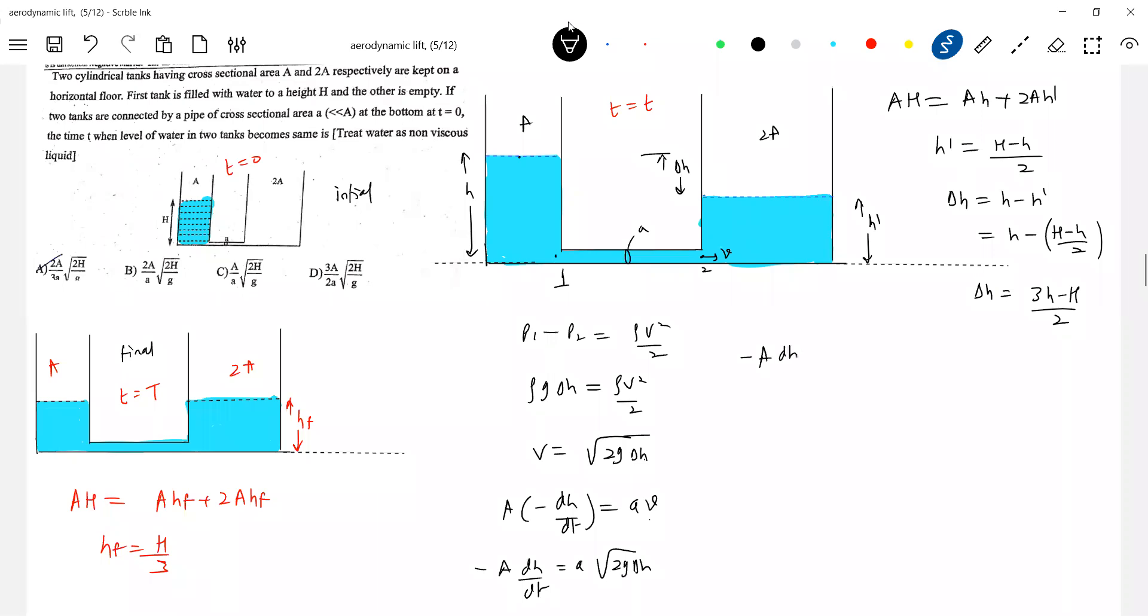What to do after this? So we know A·(-dh/dt) = a·√(2g·delta h). So this will be... Solving this, dh is equal to... a by √2 get cancelled, so this will be (a/A)·√g into dt. Negative sign we'll keep it here for the time being. So this will be (3h - h')^(1/2). We have to take the integration like this only.